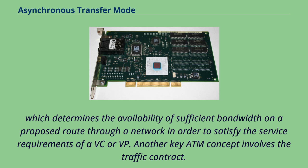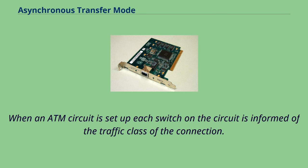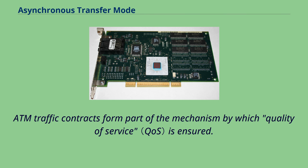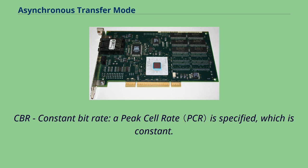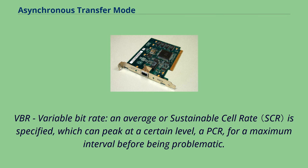Another key ATM concept involves the traffic contract. When an ATM circuit is set up, each switch on the circuit is informed of the traffic class of the connection. ATM traffic contracts form part of the mechanism by which quality of service is ensured. There are four basic types: CBR (constant bit rate), where a peak cell rate is specified which is constant; VBR (variable bit rate), where an average or sustainable cell rate is specified which can peak at a certain level (PCR) for a maximum interval before being problematic; ABR (available bit rate), where a minimum guaranteed rate is specified; and UBR (unspecified bit rate), where traffic is allocated to all remaining transmission capacity.